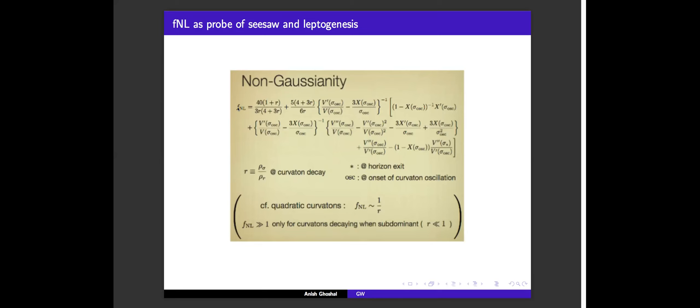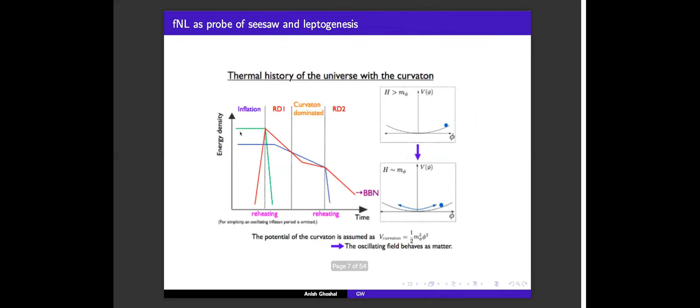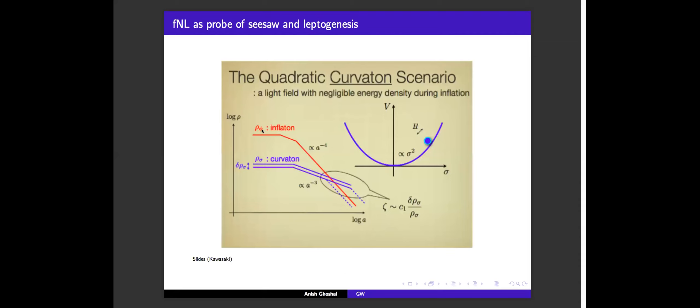You can also compute F_NL, the non-gaussianity parameter, which is proportional to the second derivative of delta-N with respect to the field phi. The first derivative gives the power spectrum P(zeta), the two-point function, and the second derivative gives F_NL. What do these parameters depend upon? The ratio between the energy density in the inflaton sector and the energy density in the curvaton sector plays a non-trivial role — increasing this ratio gives different predictions for P(zeta) and F_NL. The other key parameter is the curvaton decay width, which determines how long the curvaton dominates, since the curvaton decays when the decay width becomes equal to the Hubble rate.